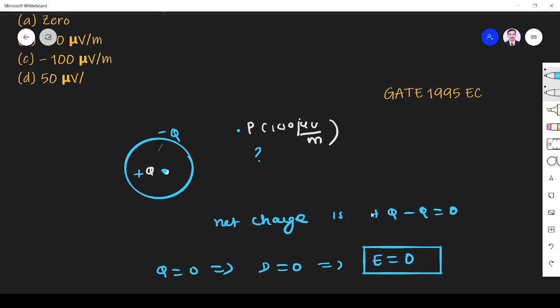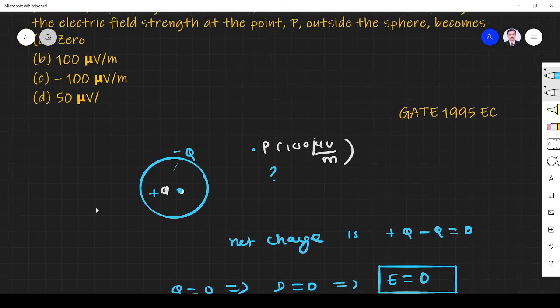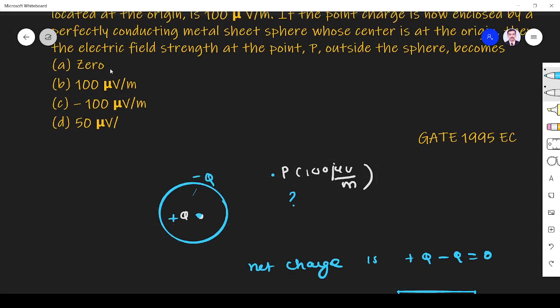So what is the answer? The answer is zero microvolt per meter. So option A is the right answer.